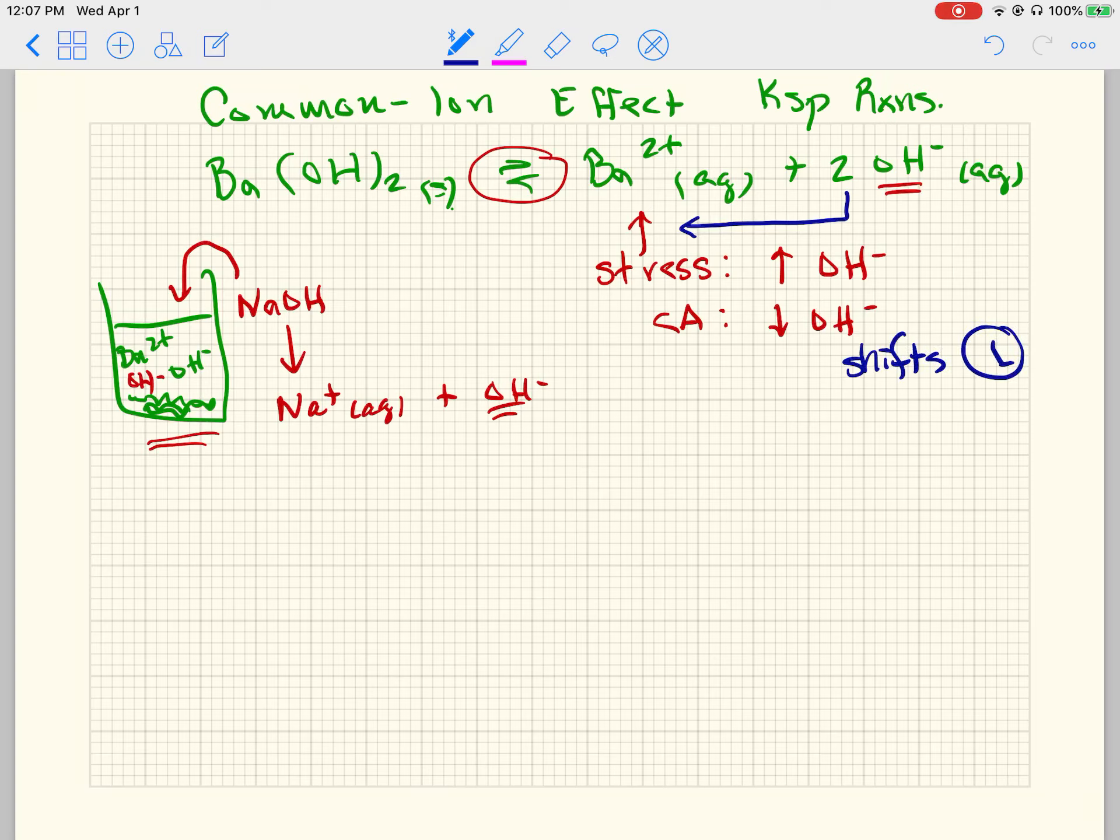So it decreases the solubility because less of it is willing to go into solution. So if you have any common ion in a Ksp, it will always decrease the solubility.